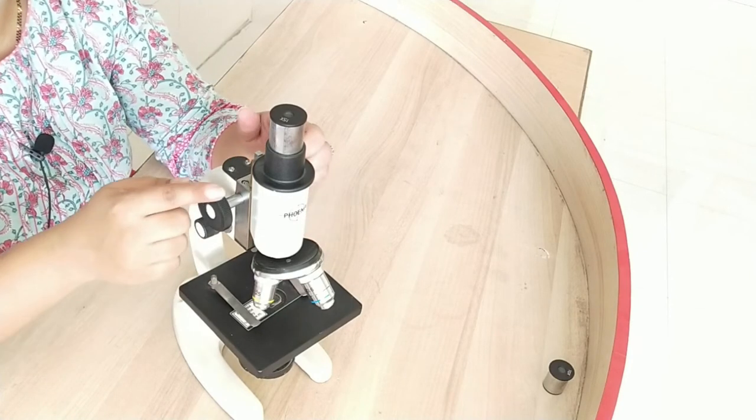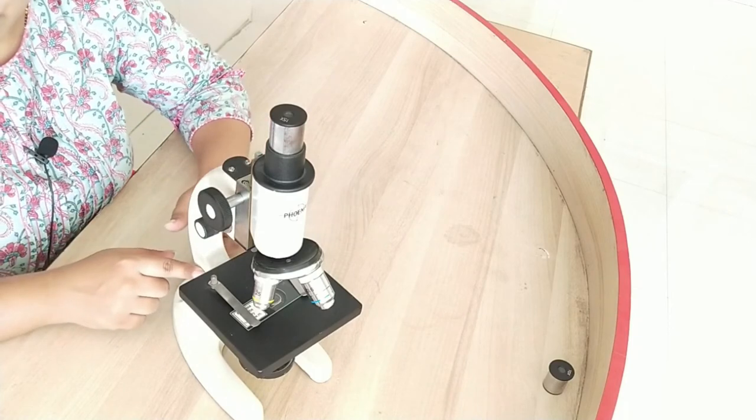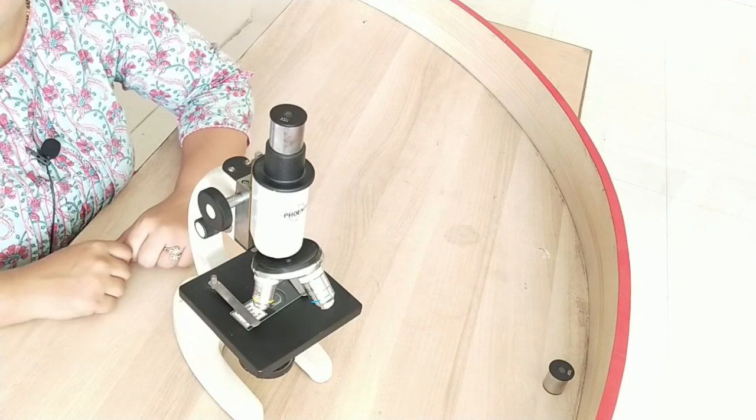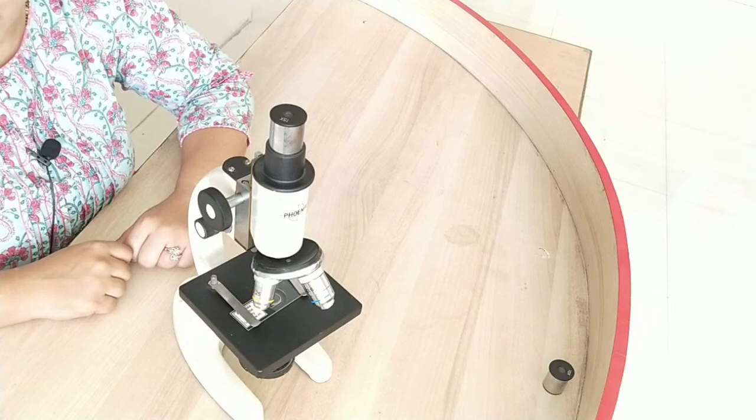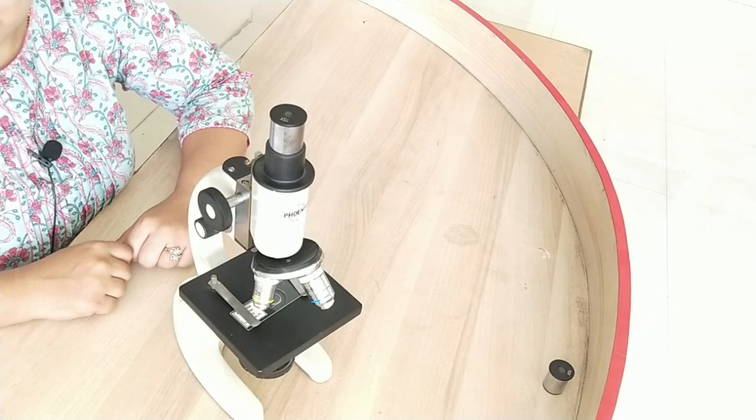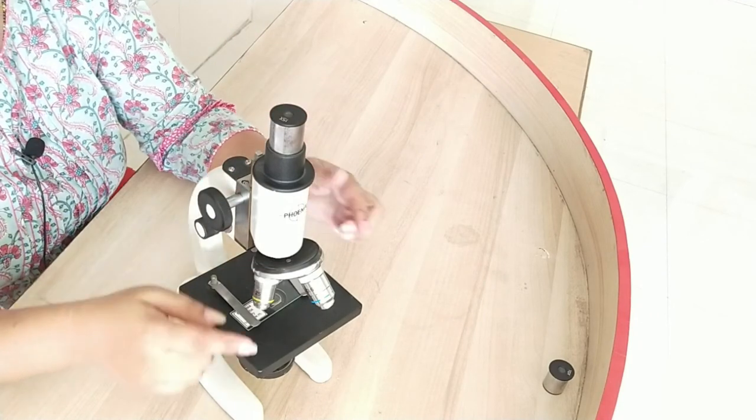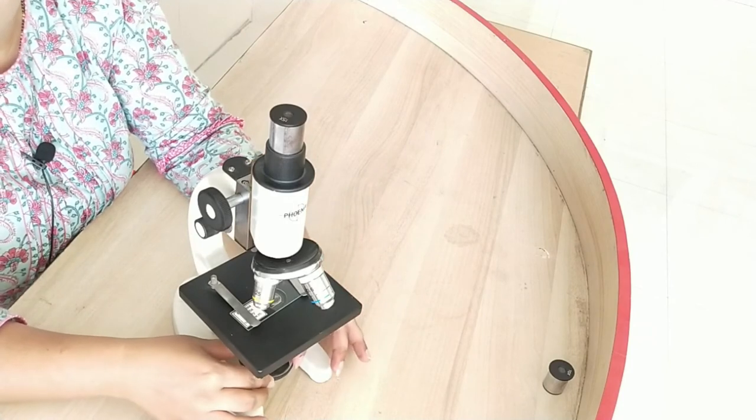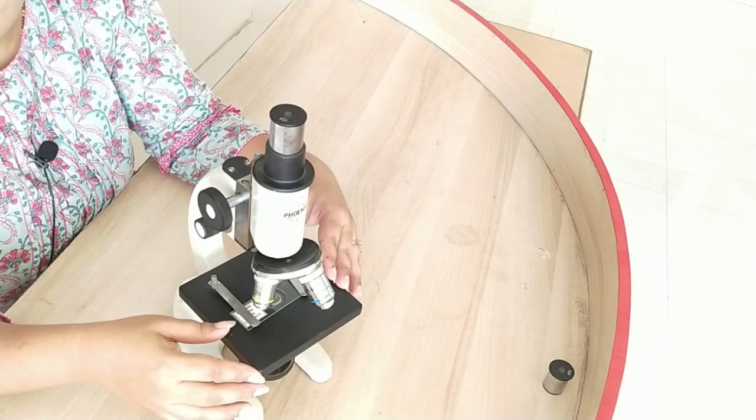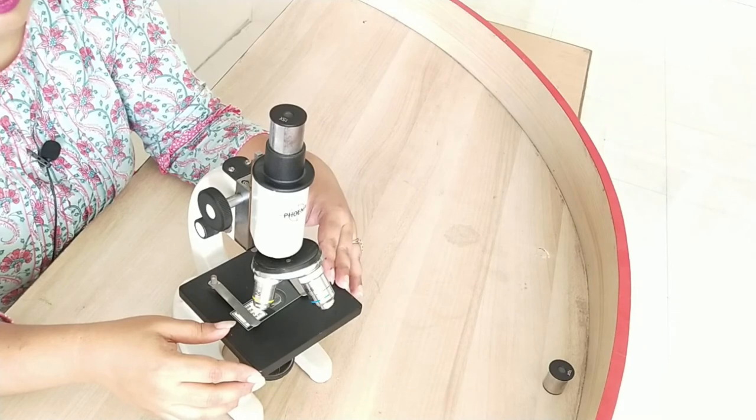These all were the mechanical parts of a microscope. Now we will discuss the optical parts. Optical parts means the lenses or the mirrors associated with the tool and here we have three optical parts.